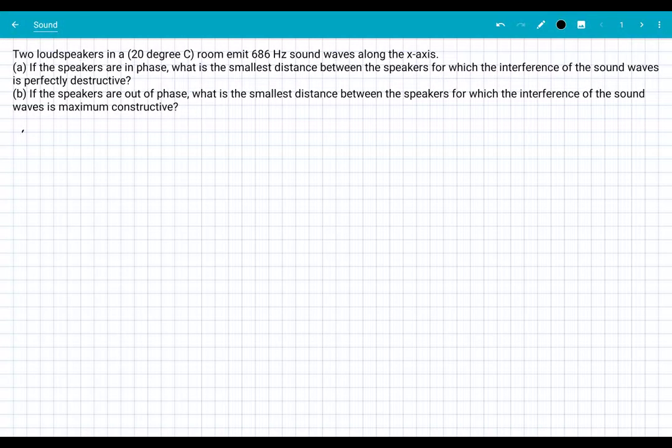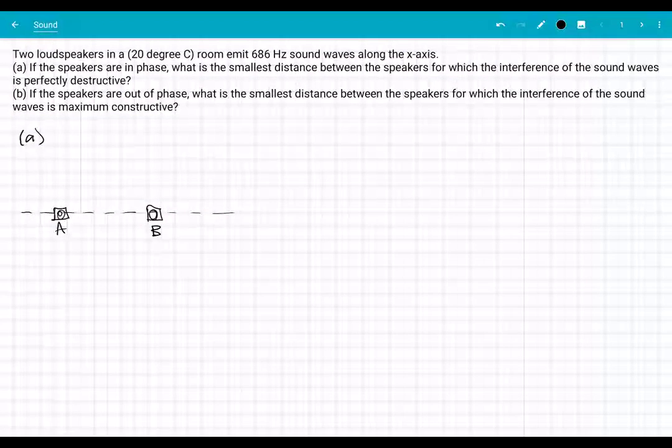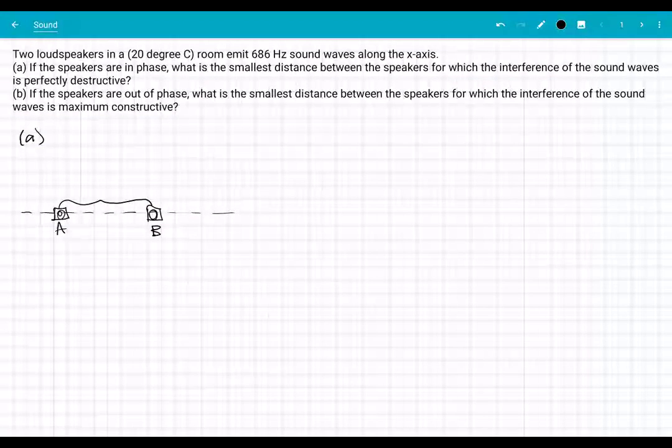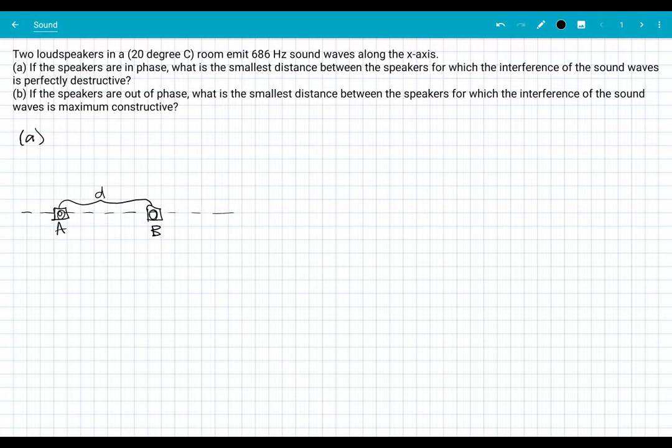We're looking at part A here. We have two speakers that are in phase, and they are along a line. Let me just draw the speakers out. So here is one speaker A and speaker B, and they are some distance D apart. Wherever you are on this line, on the x-axis, notice that the path length difference will be equal to D.